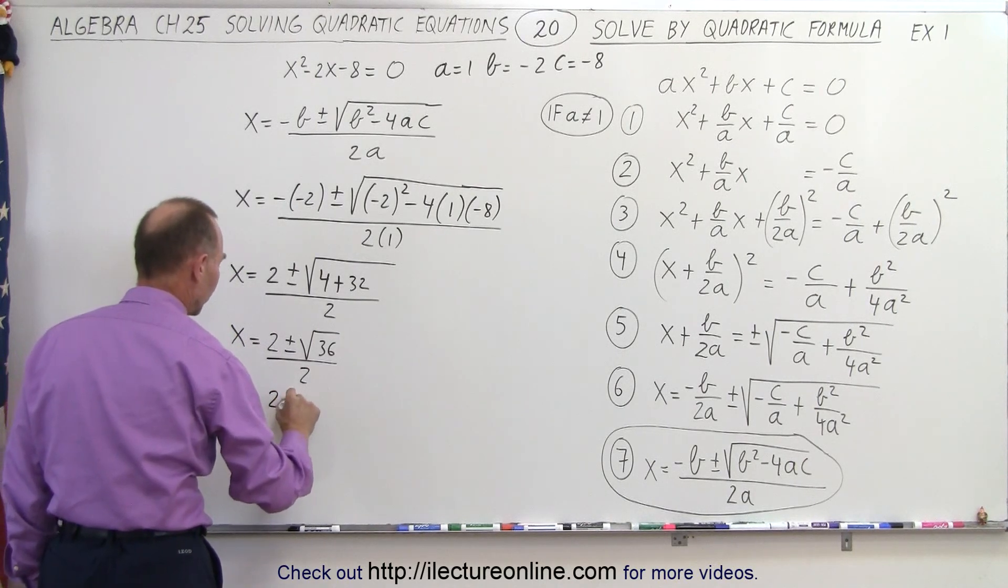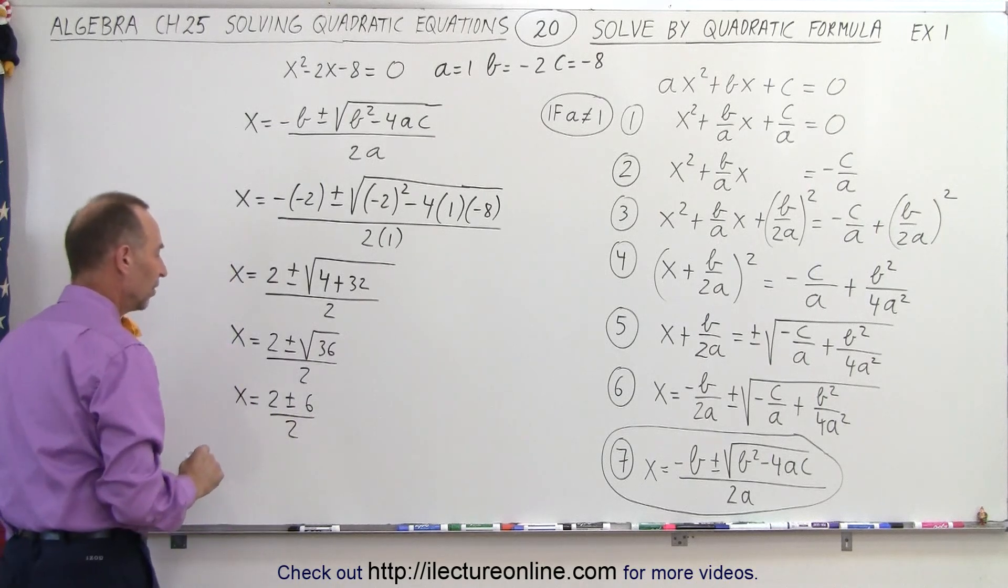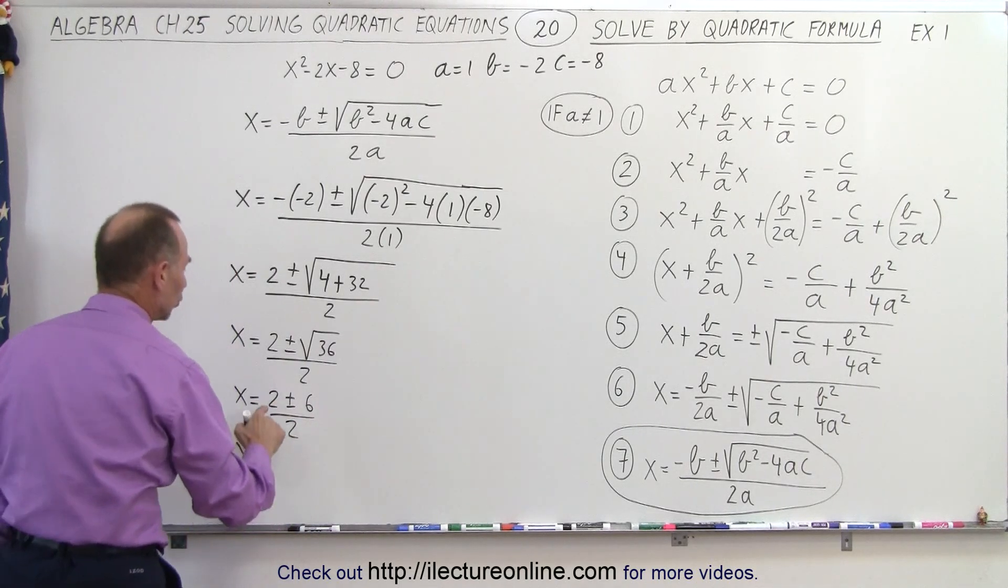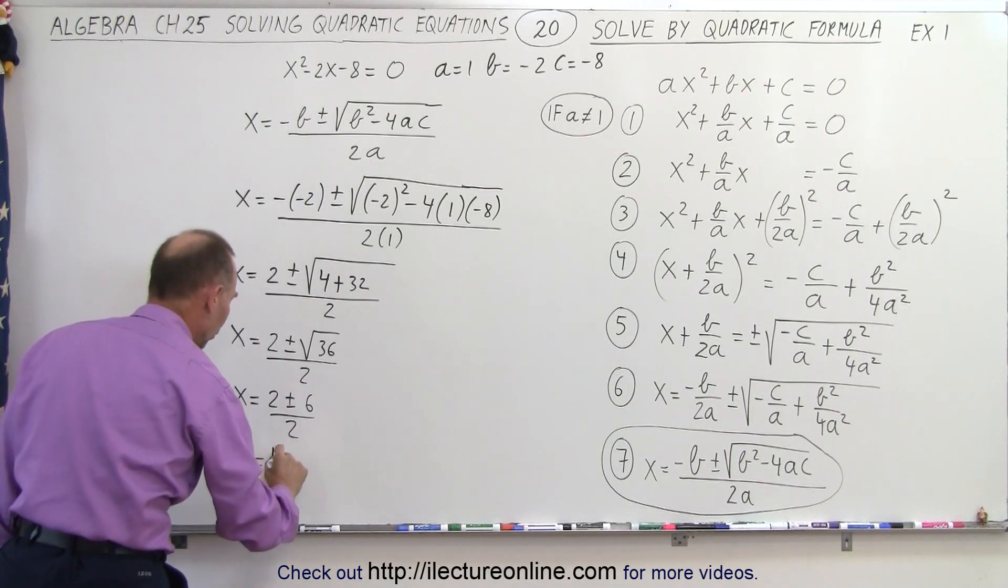So we get 2 plus or minus 6 over 2, which means we have two possibilities. X equals 2 plus 6, which is 8 divided by 2, which is 4.